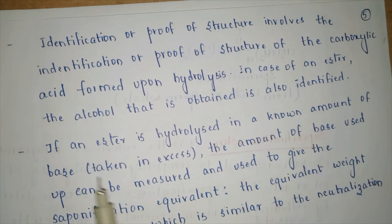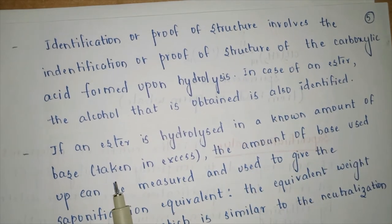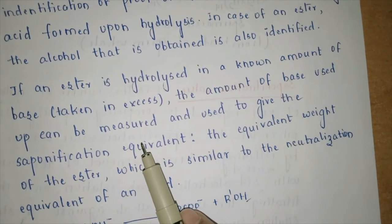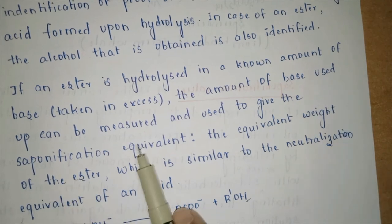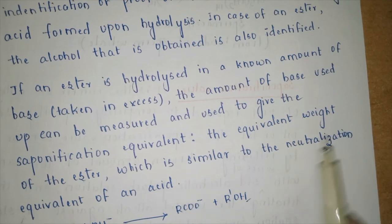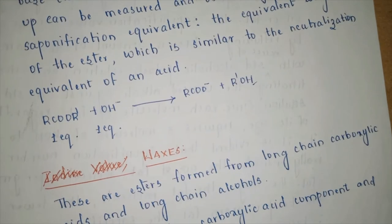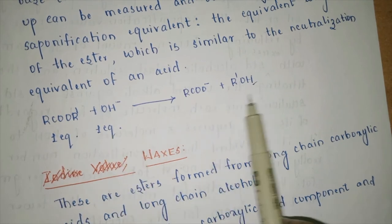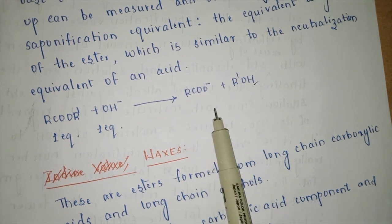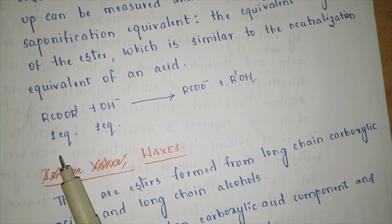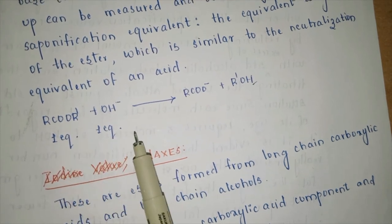If an ester is hydrolyzed in a known amount of base, the amount of base used up can be measured and used to give the saponification equivalent — the equivalent weight of an ester, analogous to the neutralization equivalent of an acid. We take the ester, react it with an equivalent of base to get an alcohol system and a carboxylate system, and calculate how much base was consumed.